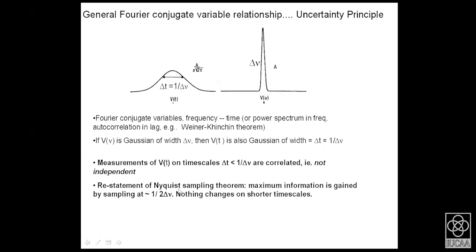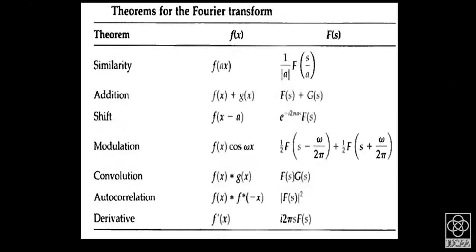The spread in frequency and the correlatedness in time are related to each other. You need to account for this while sampling — at what intervals to collect information. There is no benefit from collecting information at much finer intervals. This is what the sampling theorem states, given by Nyquist: maximum information is gained by sampling at intervals of 1/(2·Δν), as nothing changes on shorter time scales because there are no spectral contributions oscillating on time scales finer than the inverse of the bandwidth.